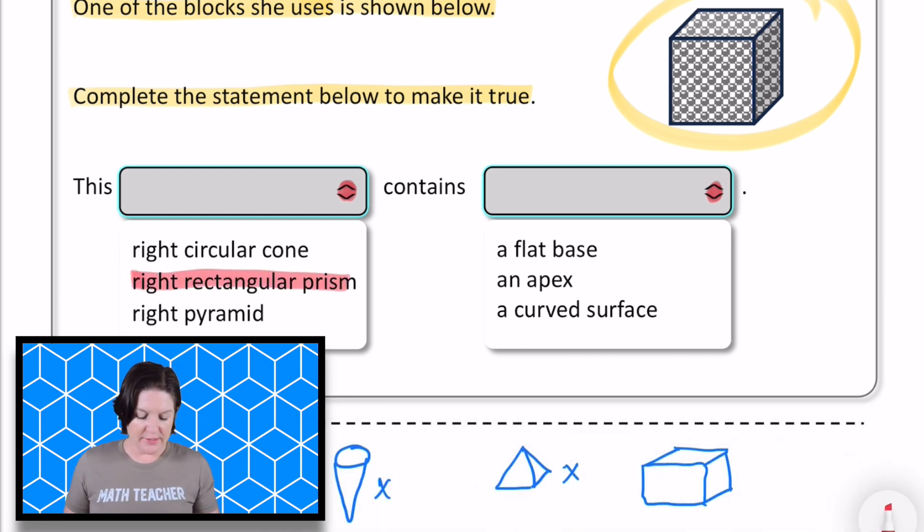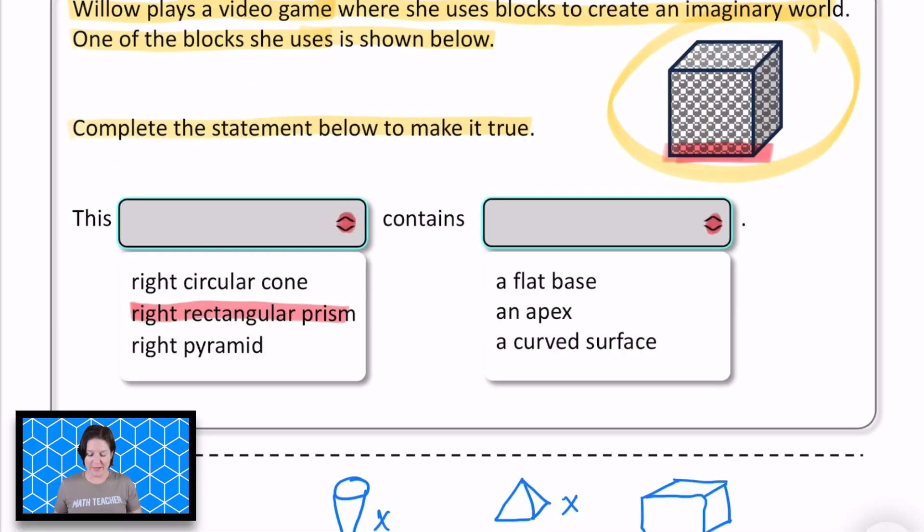Okay. This right rectangular prism contains a flat base. Well, I do see that it could be sitting on what looks like a flat base. So that could work. An apex. An apex is the tippity top point. It's like a peak of a mountain. So there isn't, I don't see an apex here, the top point. There are points here, but they're both, those would both be the same, at the same height.